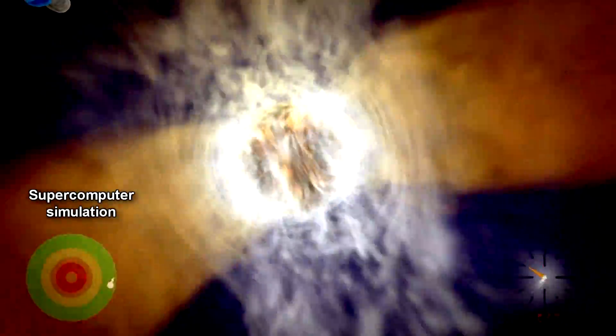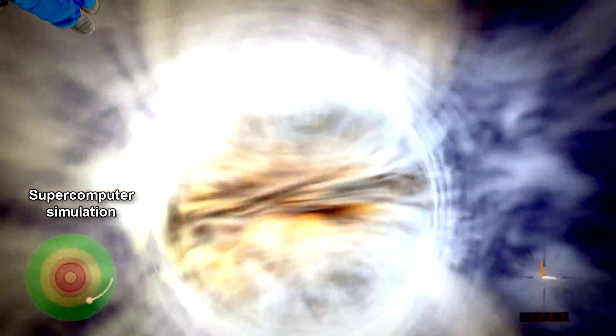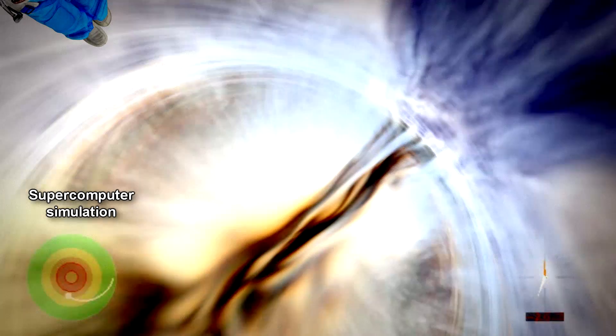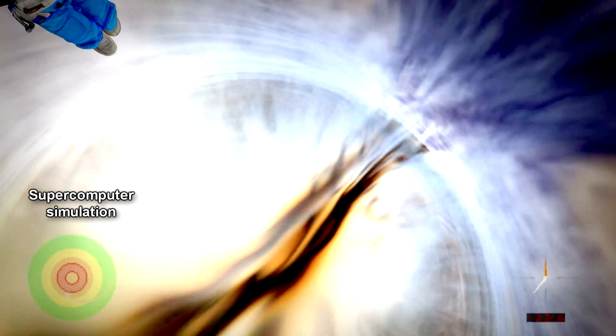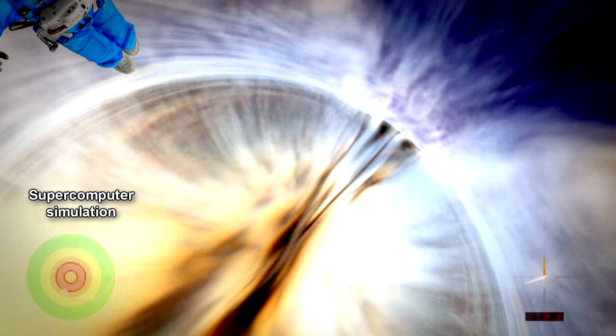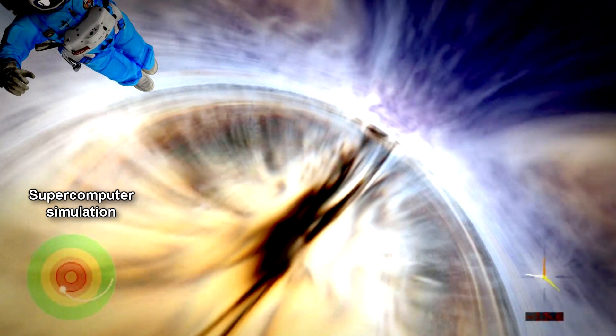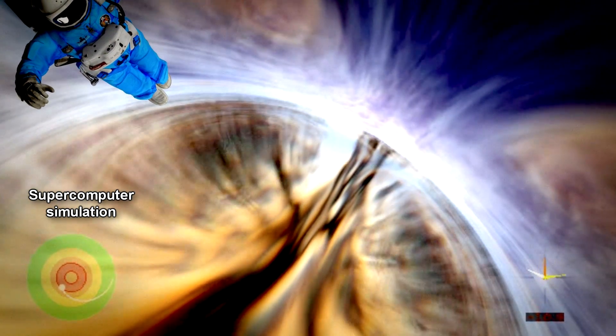And here is what the computer simulations say if you or Adam were to fall into Sagittarius A star, the four million solar mass black hole at the center of our galaxy. Here's what it would look like as you approach the event horizon. Notice that nothing special happens as we cross the outer event horizon, the point of no return. The tidal forces here would not be enough to rip you apart and you could make it through here just fine.